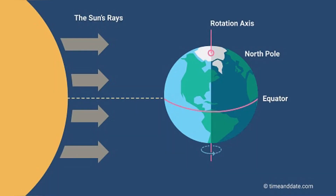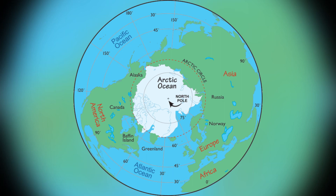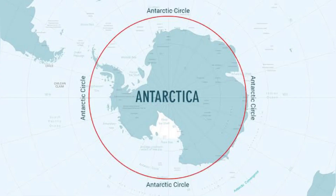Both the Arctic and the Antarctic circles are the two polar circles, and they are the most northerly and southerly of the five major latitudes. They are located approximately 66 degrees 30 minutes north and south of the equator. Here, the sun won't set for 6 months and the sun won't rise for 6 months.